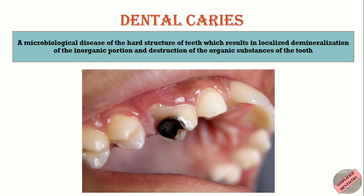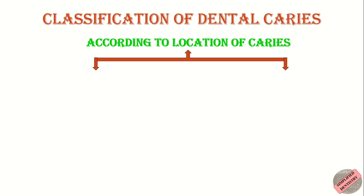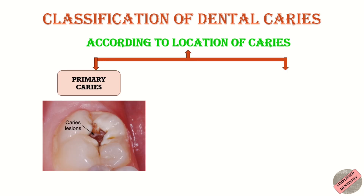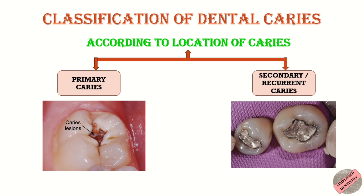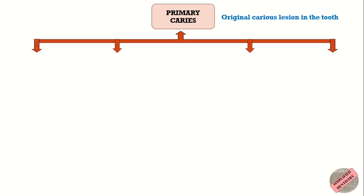The first classification is according to location. According to location, caries can be either primary or secondary. Secondary caries is also known as recurrent caries. Primary caries is the original caries lesion in the tooth and, depending upon its location, it is further classified into four types.